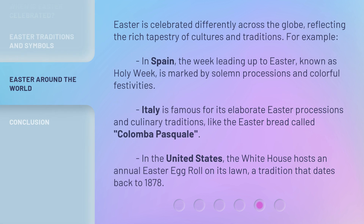Easter is celebrated differently across the globe, reflecting the rich tapestry of cultures and traditions. For example, in Spain, the week leading up to Easter, known as Holy Week, is marked by solemn processions and colorful festivities. Italy is famous for its elaborate Easter processions and culinary traditions, like the Easter bread called Columba Pasquale. In the United States, the White House hosts an annual Easter egg roll on its lawn, a tradition that dates back to 1878.